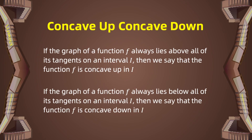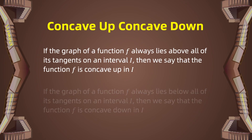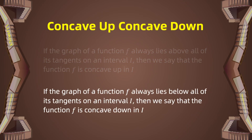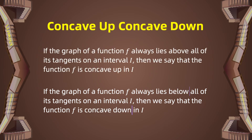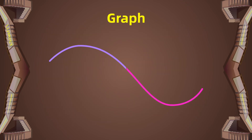Here is the definition. If the graph of a function f lies above its tangent line on the interval i, then we say that f is concave up on i. If the graph of f lies below its tangent line on the interval i, then f is concave down on i. To put it simply, concave down means the graph opens downwards and concave up means the graph opens upwards.